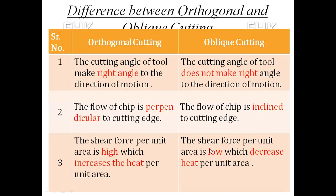Now let us look at the differentiation points between orthogonal cutting and oblique cutting. First point: In orthogonal cutting, the cutting edge of the tool makes a right angle to the direction of motion. Whereas in oblique cutting, the cutting edge does not make a right angle — it is inclined to the direction of motion. This is the first differentiation point, and you have to write this down in your examination as well.